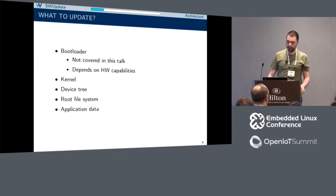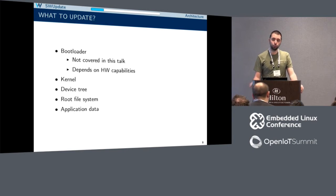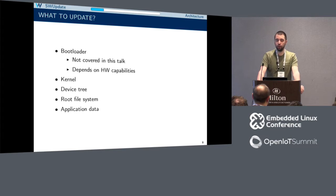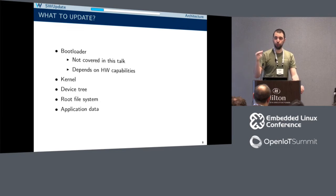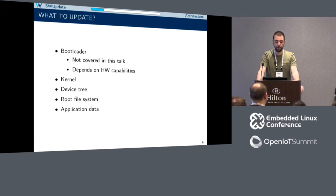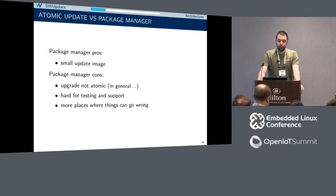Now the architecture of SW updates. What do you want to update? There are different pieces in your solution that you want to update. The first one could be the bootloader — we're not going to cover this because it's something you generally don't want to do. It's highly dependent on your SoC, your board, and the hardware. A lot of SoCs don't provide a way to have redundancy of the bootloader in memory. If it fails, the board won't boot anymore. You want to update the kernel, device tree, root filesystem, and application data.